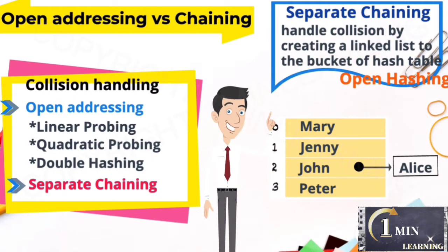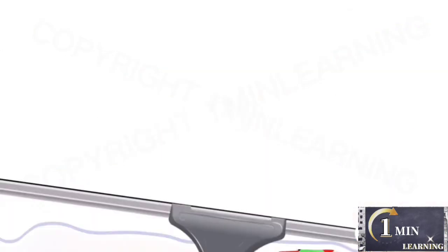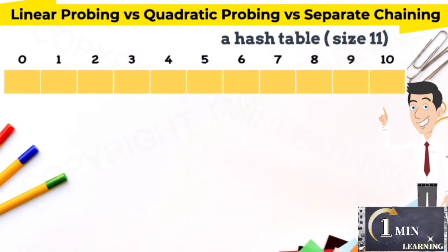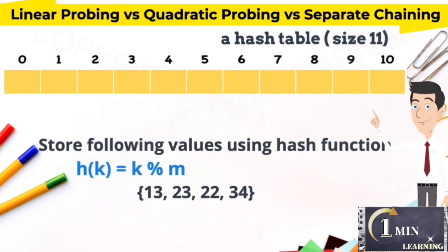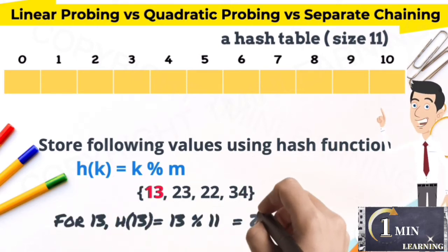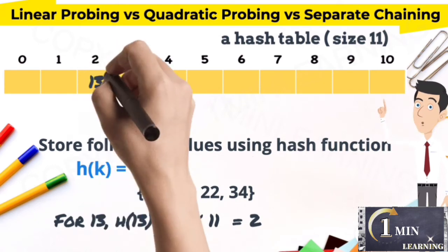Let's look at a detailed example. Assume a hash table with size 11. Store following values using the hash function h equals k mod m. First input data 13 returns the hash value 2, so it's stored at index 2.